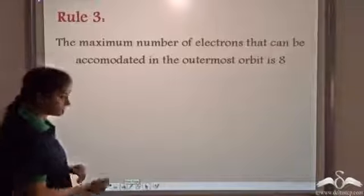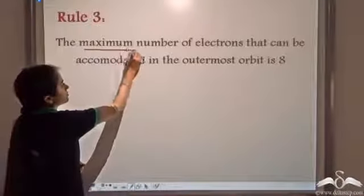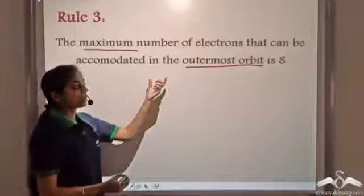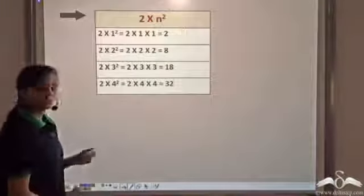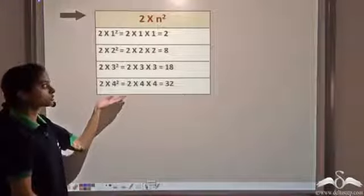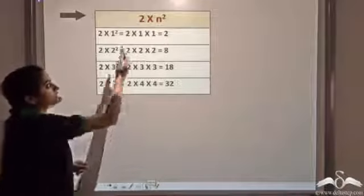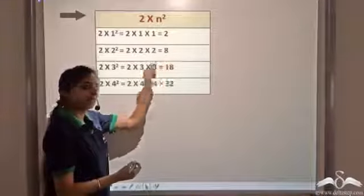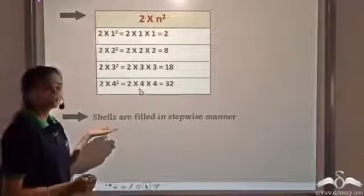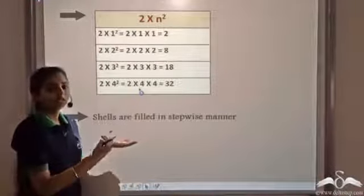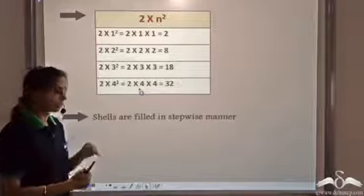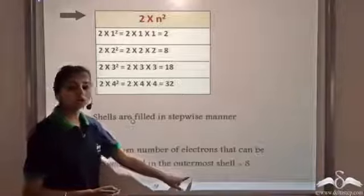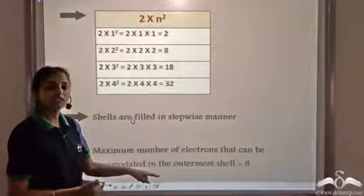The third rule says that the maximum number of electrons that can be accommodated in the outermost orbit is 8 — the outermost orbit cannot have more than 8 electrons. To revise all three rules: Rule 1 — electrons are occupied following the 2n² rule, so the first shell can have a maximum of 2 electrons, the second shell 8, and so on. Rule 2 — shells are filled stepwise, K shell first, then L, and so on. Rule 3 — the outermost shell cannot have more than 8 electrons.